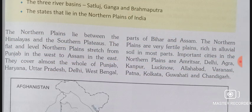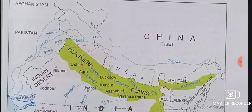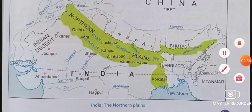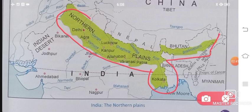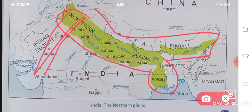Let us look at the map to see where the Northern Plains are. All the green-colored area on the map is your Northern Plains area. If you studied the previous lecture on Northern Mountains, we saw the mountain area on the map. And here, just below the mountains, you can see the plains.